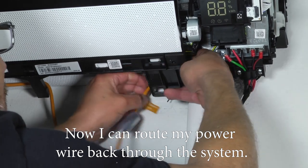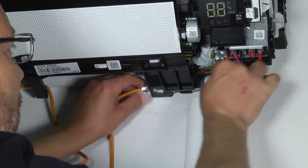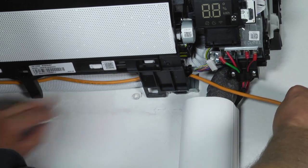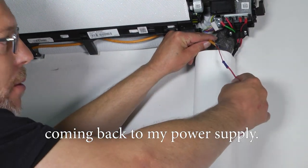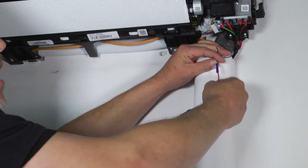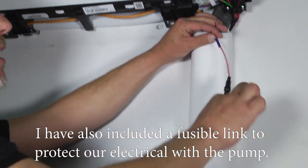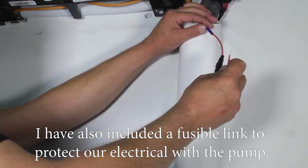Now I can route my power wire back through the system. You can see that I've shortened my cable length coming back to my power supply. I've also included a fusible link to protect our electrical with the pump.